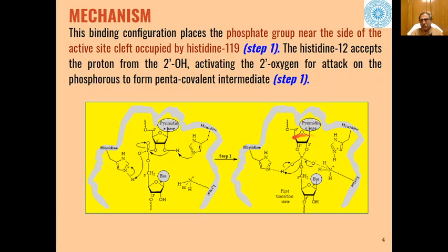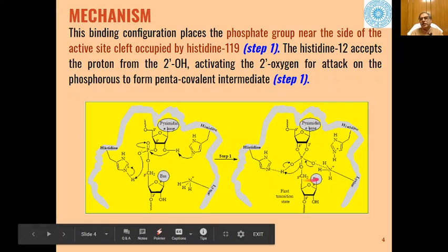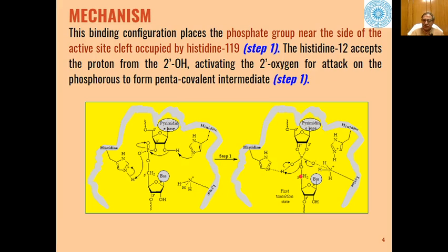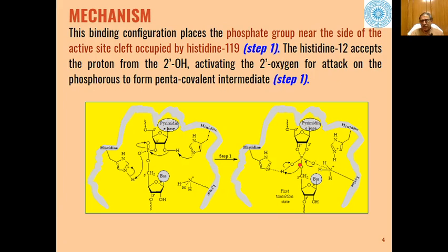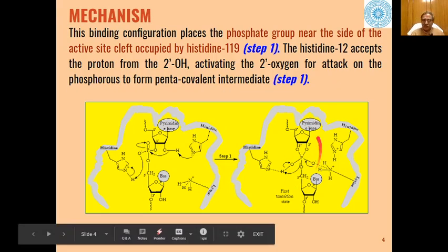So this type of pentavalent covalent intermediate is formed in the first step. This is a covalent intermediate. You can see that the substrate forms this covalent complex with the enzyme moiety.